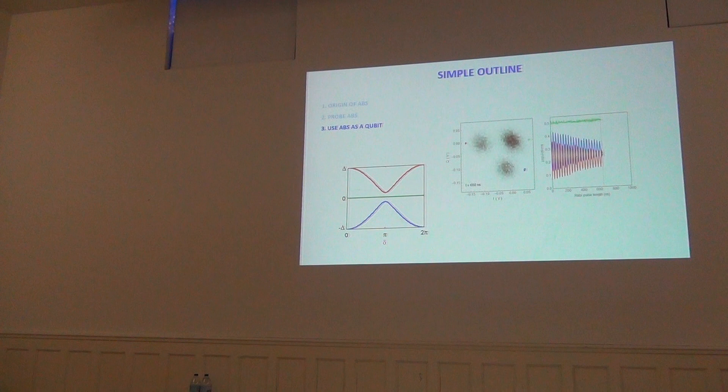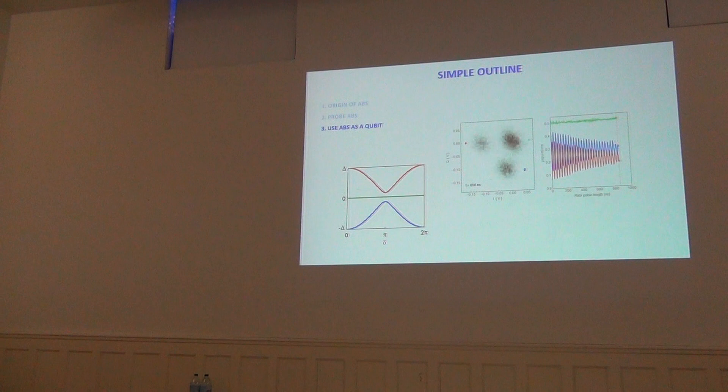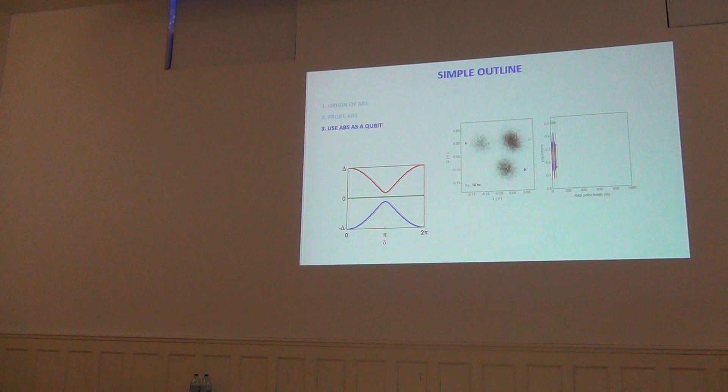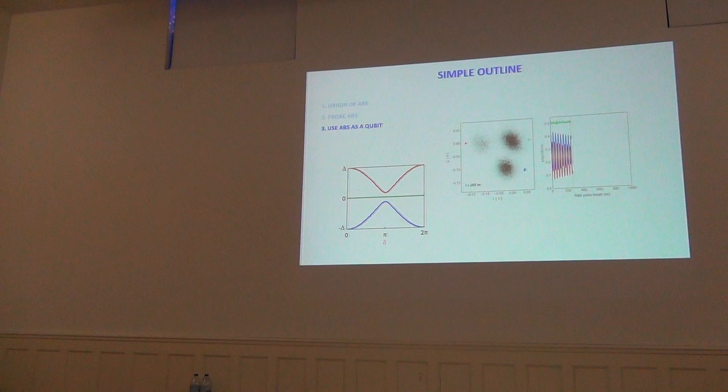Welcome again for this second part of the lecture on mesoscopic superconductivity. Yesterday we worked on building Andreev bound states, which are localized states that form in very generic weak links. When we have two superconductors with different phases, due to this phase frustration, these Andreev bound states form with an energy that depends on the phase difference between the two electrodes, well inside the superconducting gap delta.